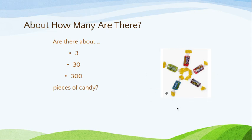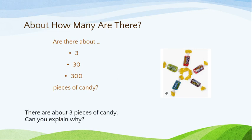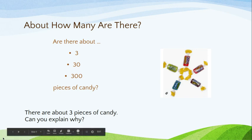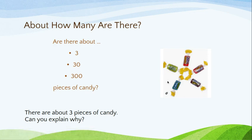About how many are there? Are there 3, 30, or 300 pieces of candy? Remember, we're not actually counting — even though with something this small you might be tempted to count. Given these three options, what would be the best reasonable estimate? There are about 3 pieces of candy. I can easily eliminate 300 because I would have a large amount if there were 300, and even 30 would be much more than what I see in this picture. So 3 is definitely the most reasonable estimate.